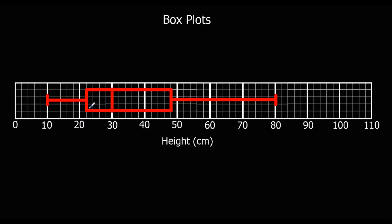Each of these lines down here, they mean something. So this line here, that's the lowest value. So in this case, the plant with the lowest height. So the lowest value. And this one is the highest value, so that's the tallest plant. Highest value.